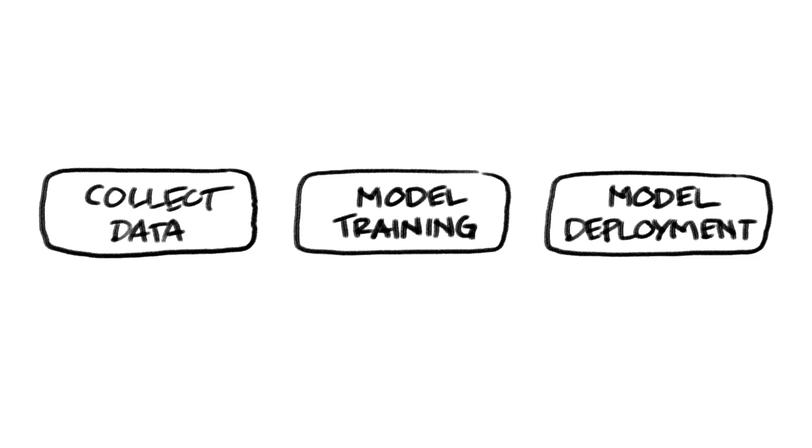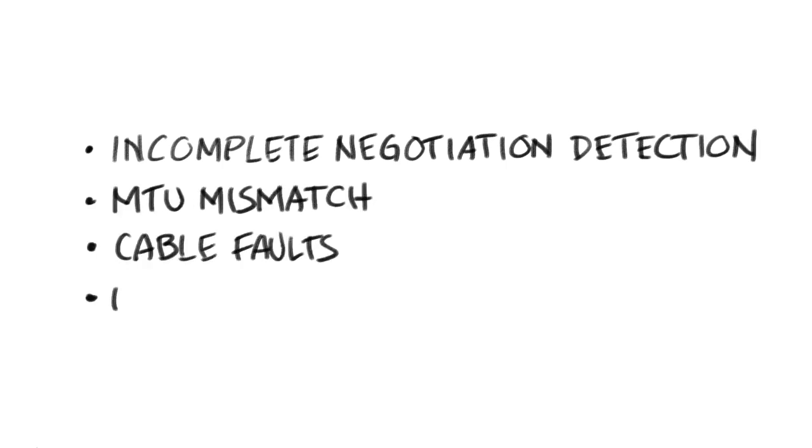Let's use a real-world example. In networking, decision trees can be applied to incomplete negotiation detection, MTU mismatch, among others.